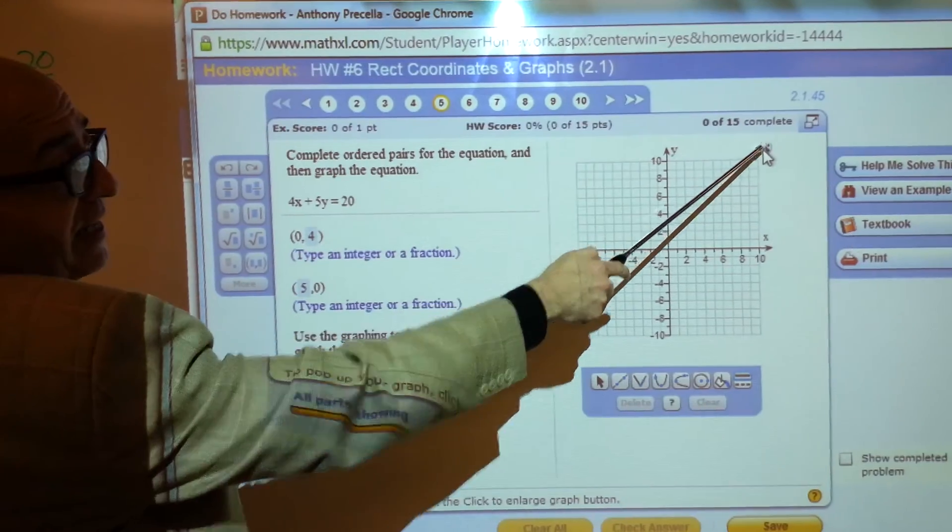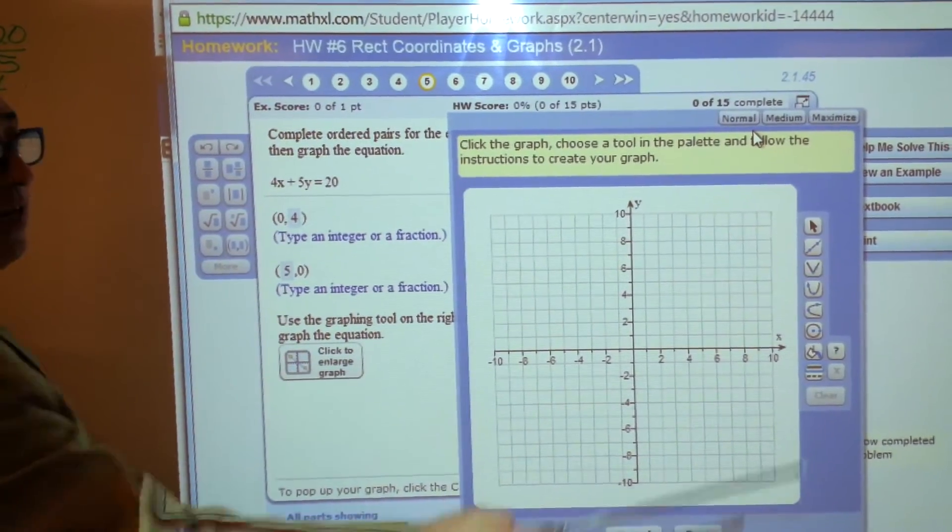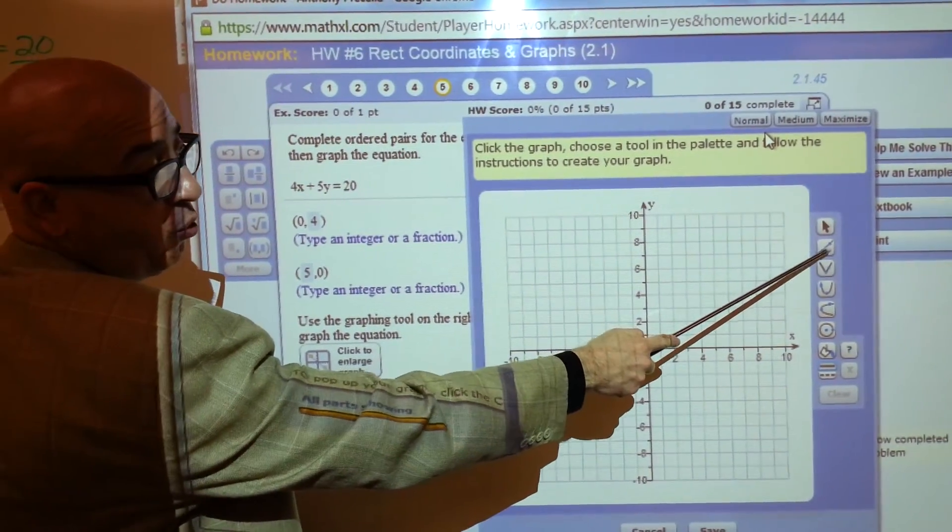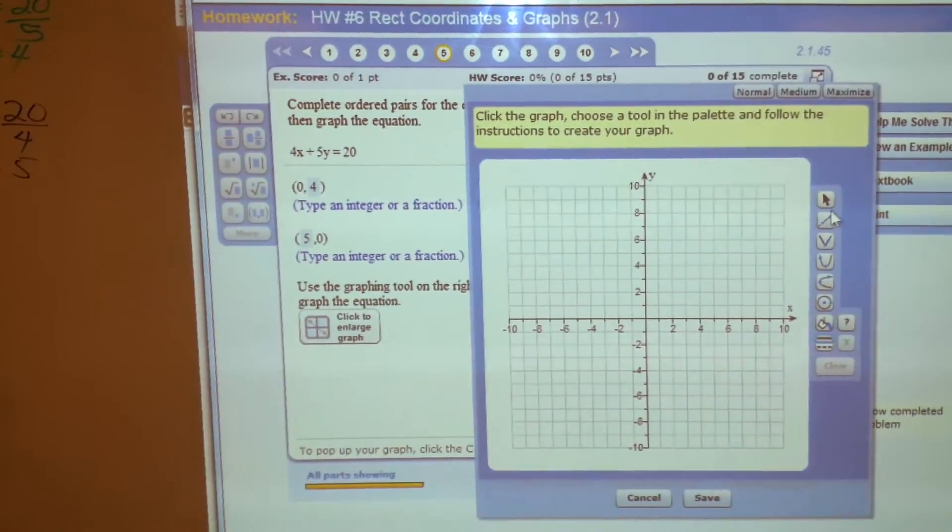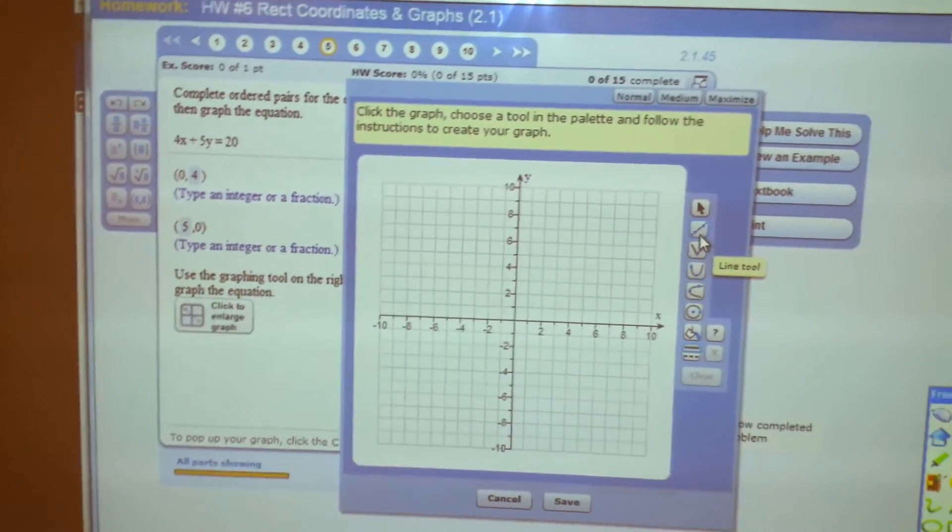Now we're going to graph another line using this graphing tool. I like to magnify it, and then you're going to click right here, the line tool. If you move your mouse around, hover it, it'll say the name of the tool.